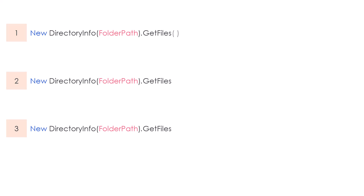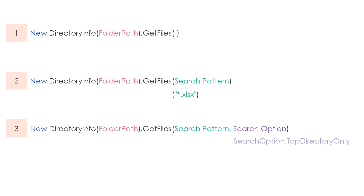The first overload is without any parameters — just use the method with empty brackets to get all files from the folder, from the top directory only. The second overload uses a search pattern to define which files you want, for example to get only Excel files. The third overload uses both search pattern and search option — either TopDirectoryOnly or AllDirectories. Using one of these statements we can get the files as a FileInfo array, and then access properties like name, size, LastWriteTime, etc.